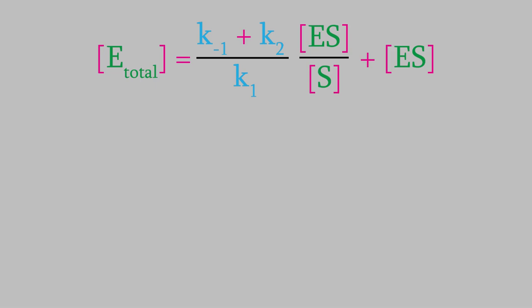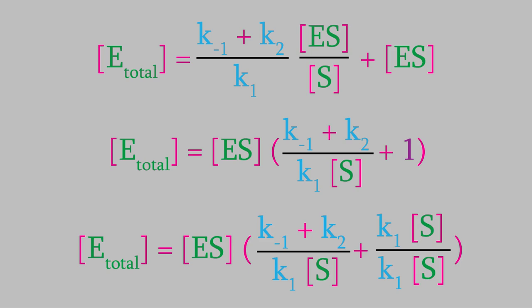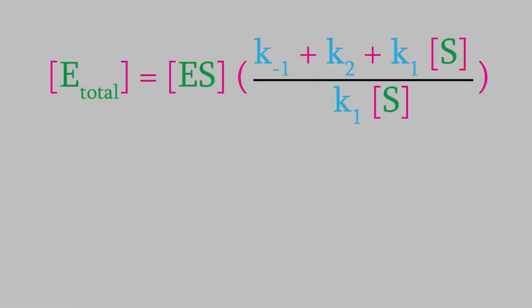So, let's just do a little algebra to solve this equation for ES. First, we can factor ES out of both terms on the right side of the equation. Next, let's make that term in parentheses a little simpler by making it one big fraction. We can do that by rewriting 1 as K1S over K1S. That means we now have two fractions with the same denominator, which we can add together. Finally, we'll solve the equation for ES by dividing both sides by the term in parentheses, which gives us this.